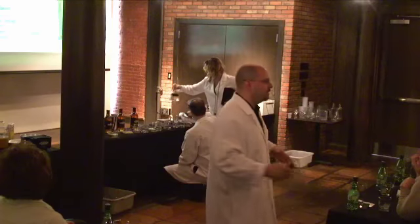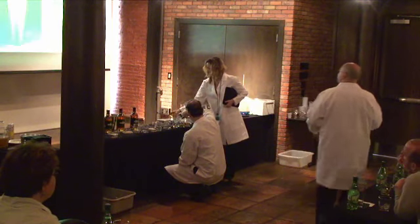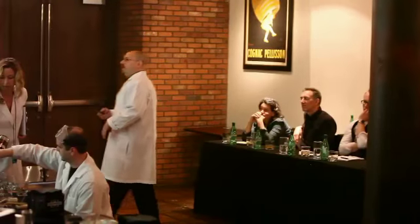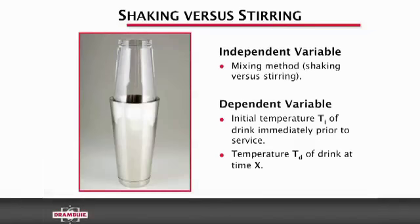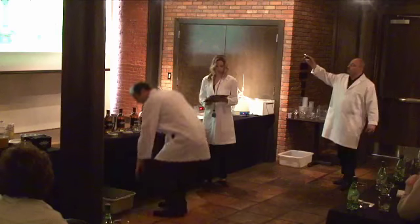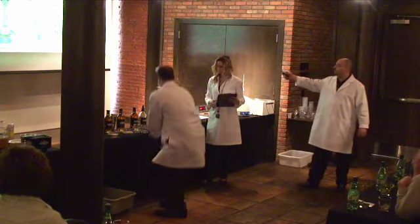So essentially, they both do the same thing to the drink — that's sort of the assumption out there. Here are our independent variables: mixing method, that's what we actually changed. Dependent variable is the initial temperature of the drink just prior to service, and the temperature of the drink at any given time X. We controlled for mixing time, drink volume, and all the other normal stuff.